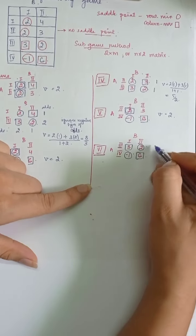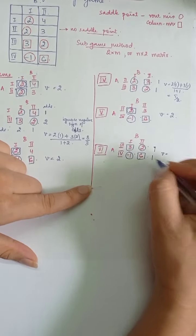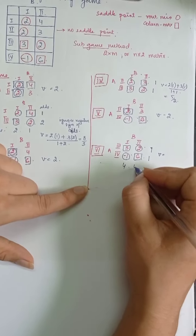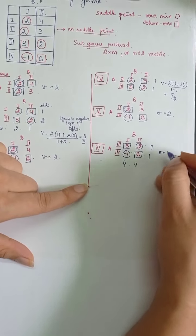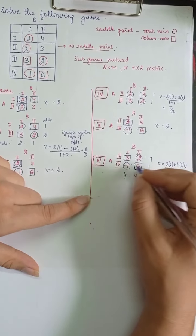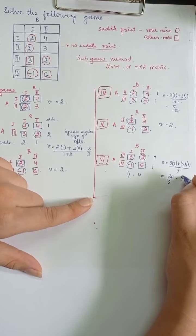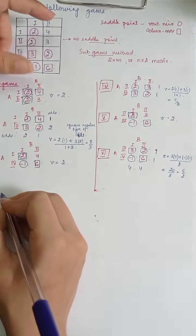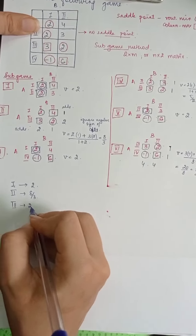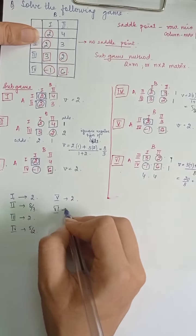For subgame 6 using the odds method: minus 1 minus 6 amounts to 7 (ignoring the negative sign), and 3 minus 2 = 1. The sum is 8. Also: 2 minus 6 = 4 and 3 minus (minus 1) = 4, sum = 8. The value of the game is (3×7 + (minus 1)×1) / 8 = (21 minus 1) / 8 = 20/8 = 5/2. So the values for all subgames are: SG1=2, SG2=8/3, SG3=2, SG4=5/2, SG5=2, SG6=5/2.